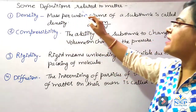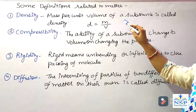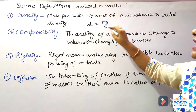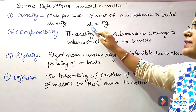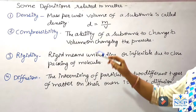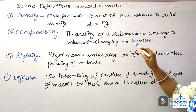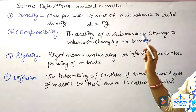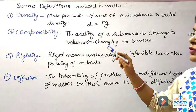Some definitions related to matter: Number one, density — mass per unit volume of a substance is called density. Density is directly proportional to mass; if mass is more, then density is also more. Number two, compressibility — the ability of a substance to change its volume on changing the pressure is called compressibility. Compressibility is higher in gases and least in solids.